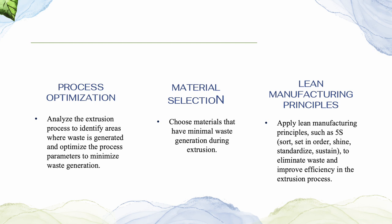Next, by material selection. Choose materials that have minimum waste generation during extrusion. Consider using recycled or post-consumer materials whenever possible, as they can reduce waste and promote circularity in the production process. Last but not least, by lean manufacturing principles. Apply lean manufacturing principles such as 5S — sort, set in order, shine, standardize, and sustain — to eliminate waste and improve efficiency in the extrusion process. This includes organizing workspace, standardizing processes, and reducing unnecessary movement and inventory. By implementing these waste reduction strategies, manufacturers can minimize waste generation, improve resource efficiency, and reduce the environmental impact of the extrusion process.